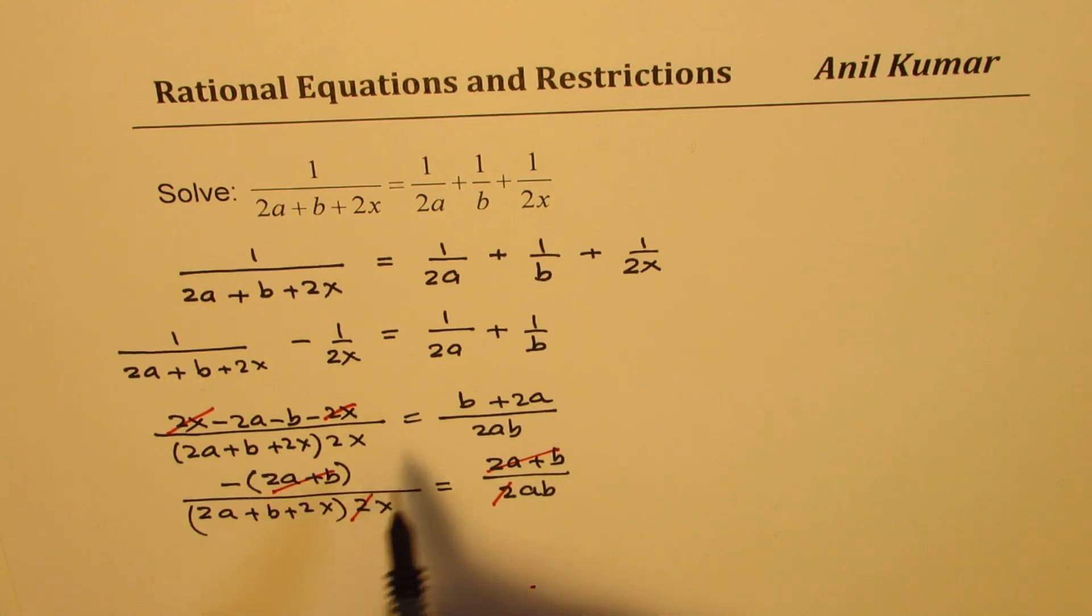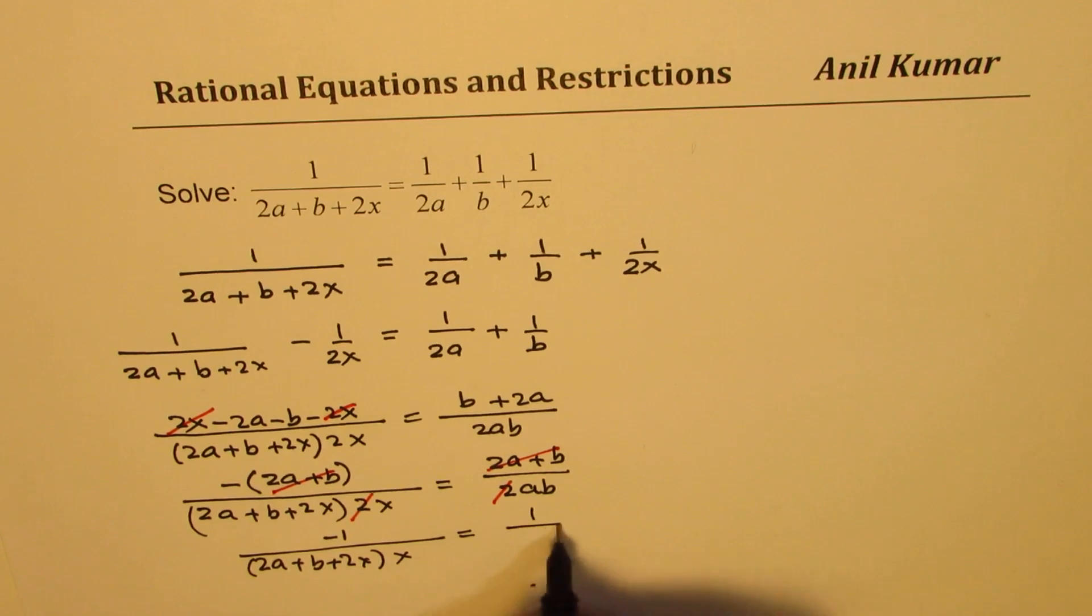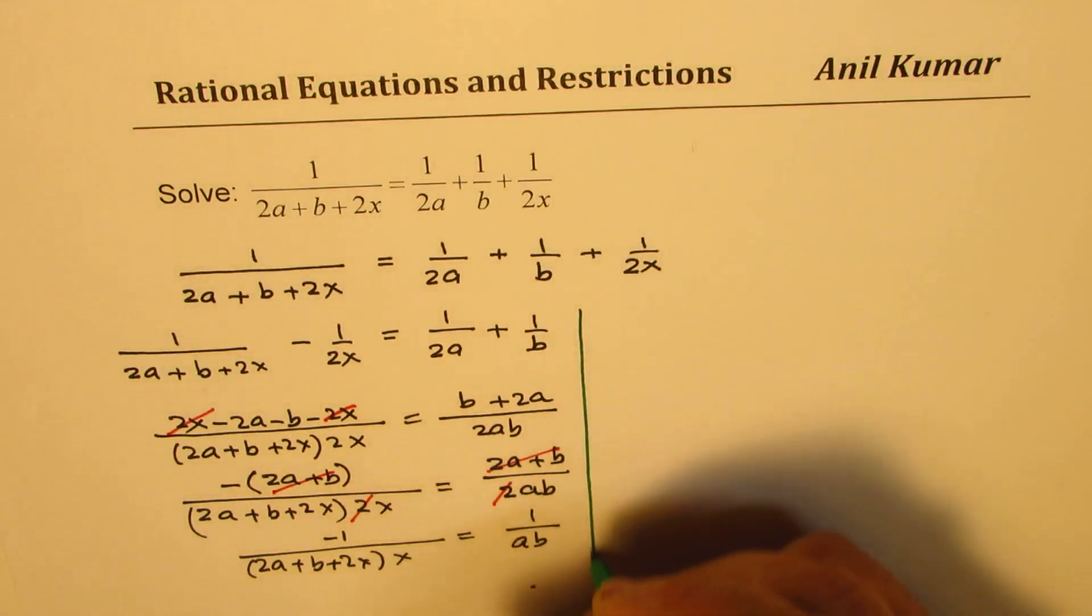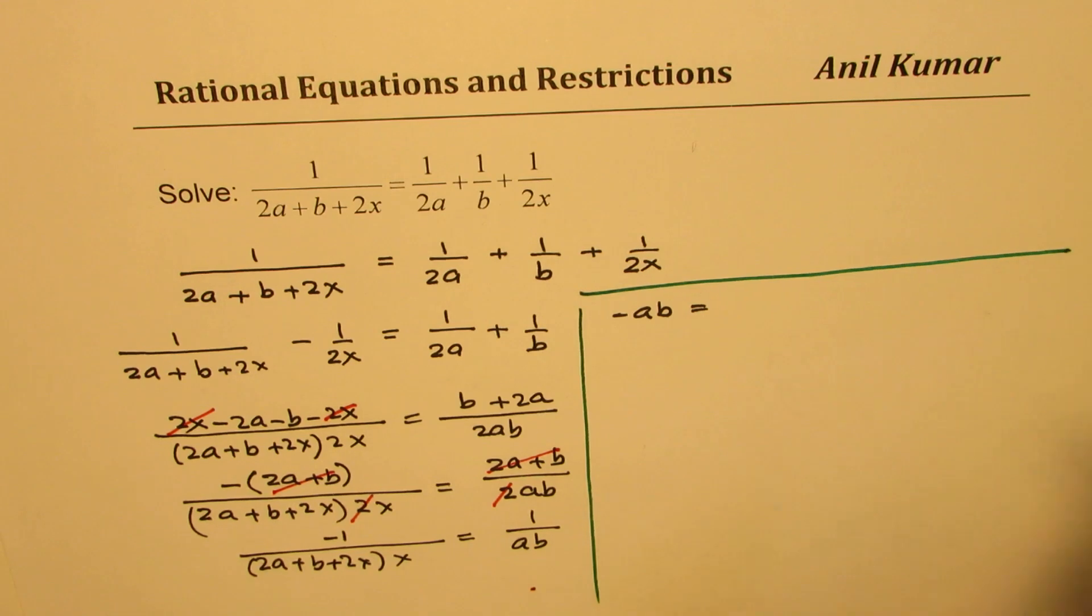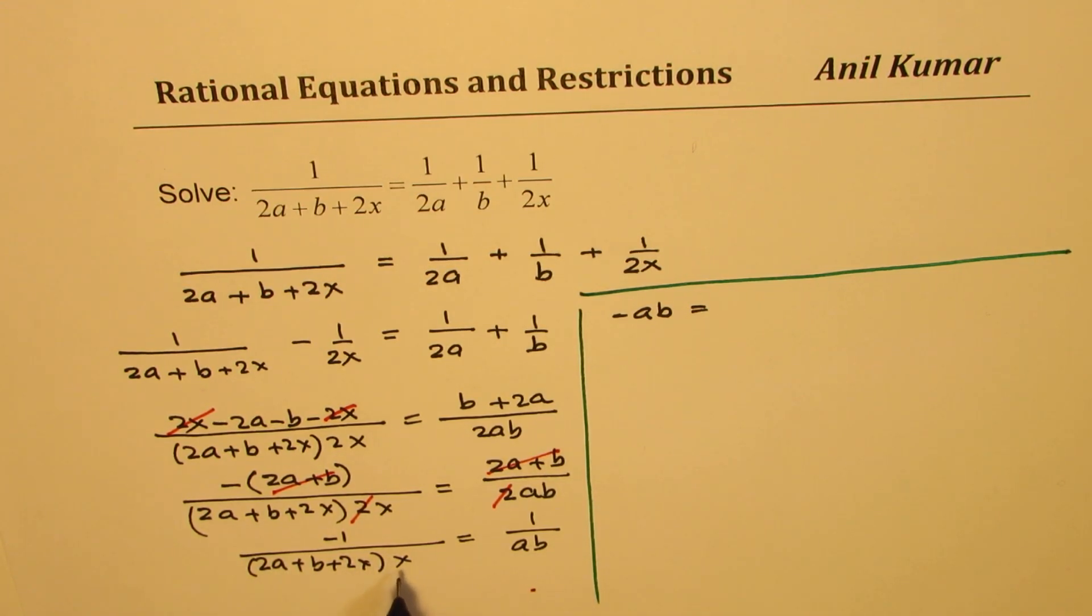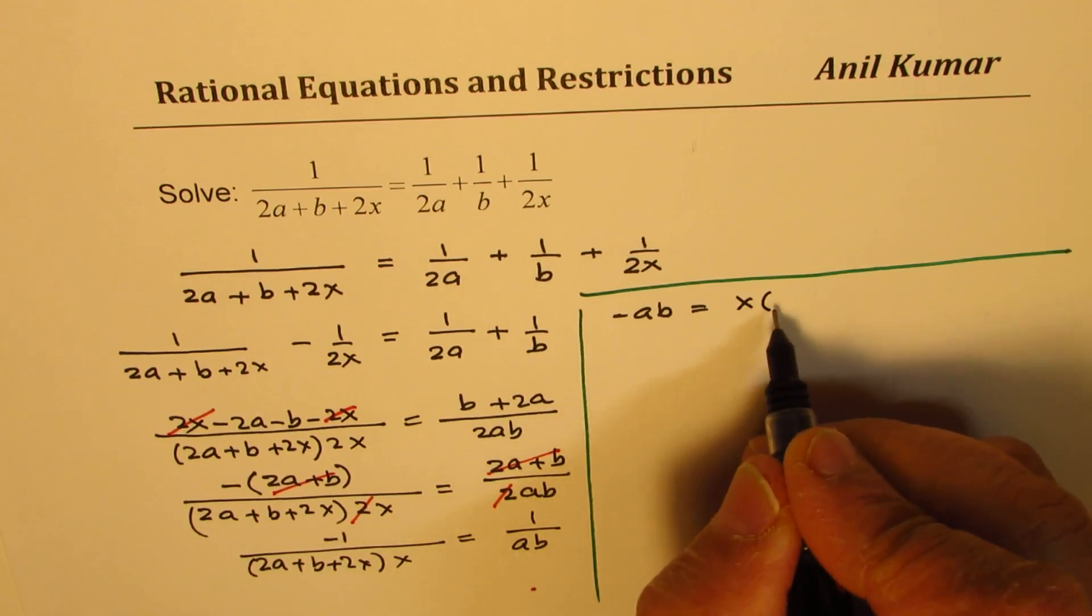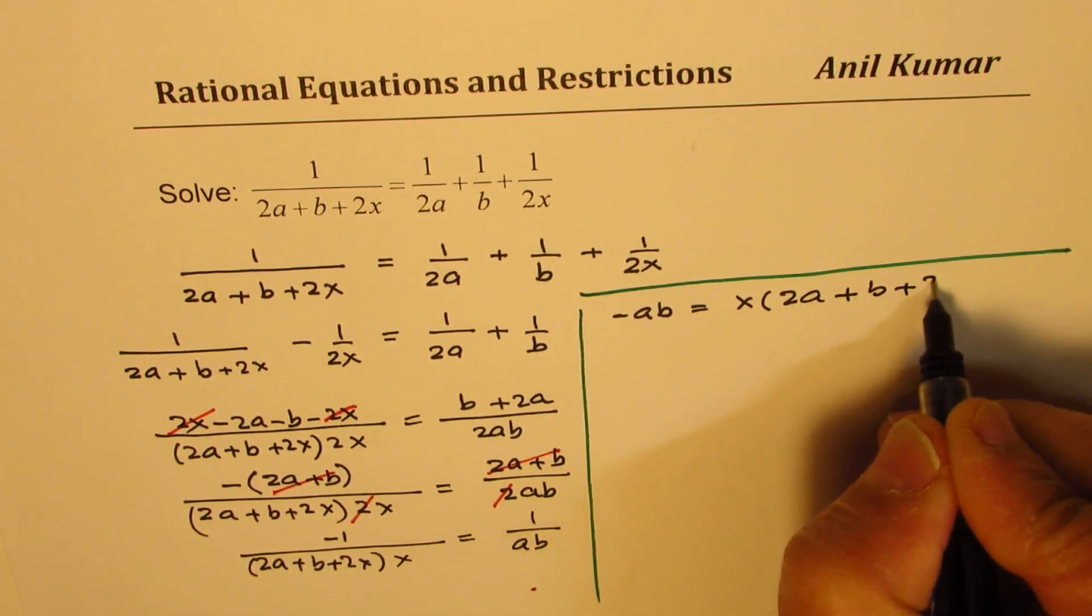So now we could write this as minus 1 over 2a plus b plus 2x times x equals to 1 over ab. So now to solve this, we'll just cross multiply. Let me keep it as such.